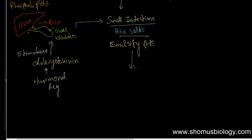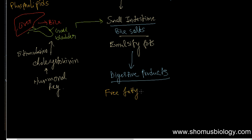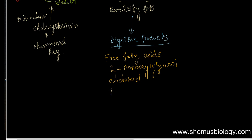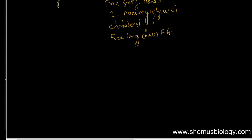These bile salts emulsify the fats present in the small intestine. As a result of this emulsification, the digestive products are: free fatty acids, 2-monoacylglycerol, cholesterol, and long-chain fatty acids. These are all the components produced as digestive products.